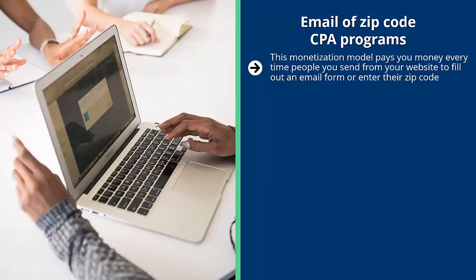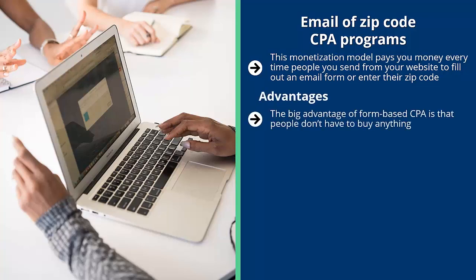Email or zip code CPA programs pay you every time people you send from your website fill out an email form or enter their zip code. These forms can be simple or quite complex — some ask for a lot of information across multiple pages. Generally, the less information required, the less money you make; the more information asked for, the more you earn. A big advantage is that people don't have to buy anything — they just enter their email or zip code and you get paid.